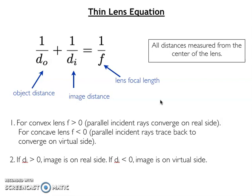When focal length is positive, convex lens. When focal length is negative, concave lens.